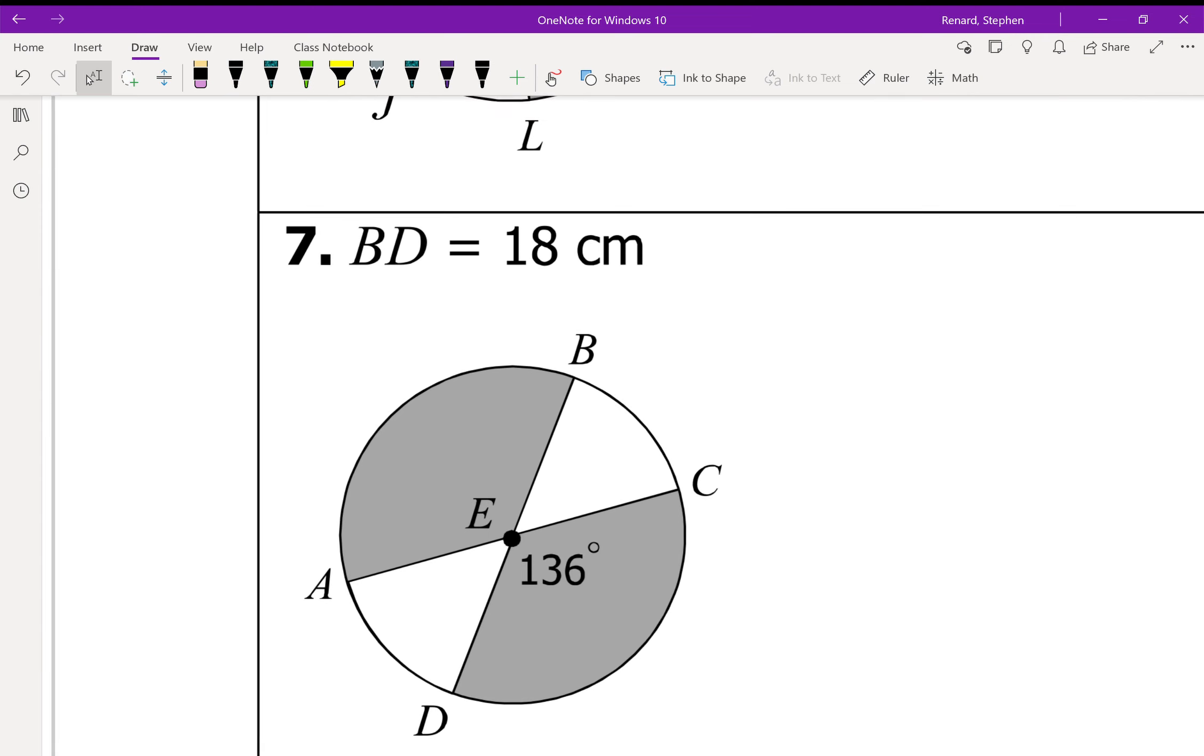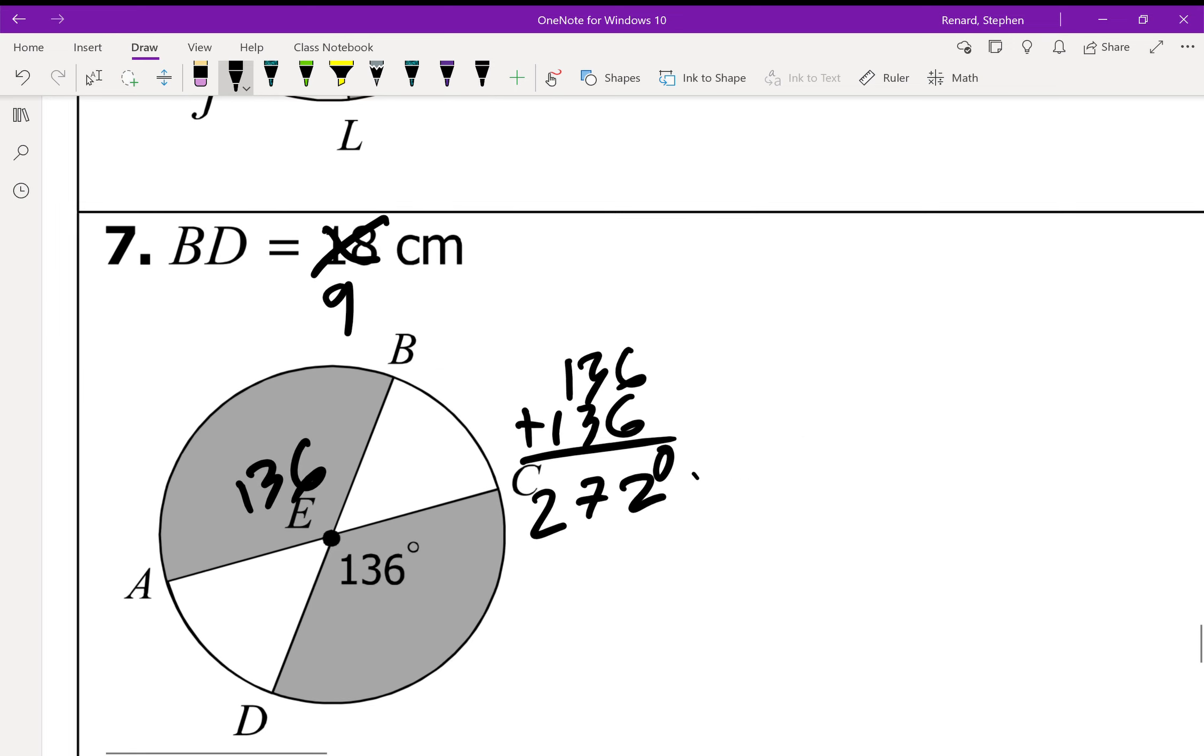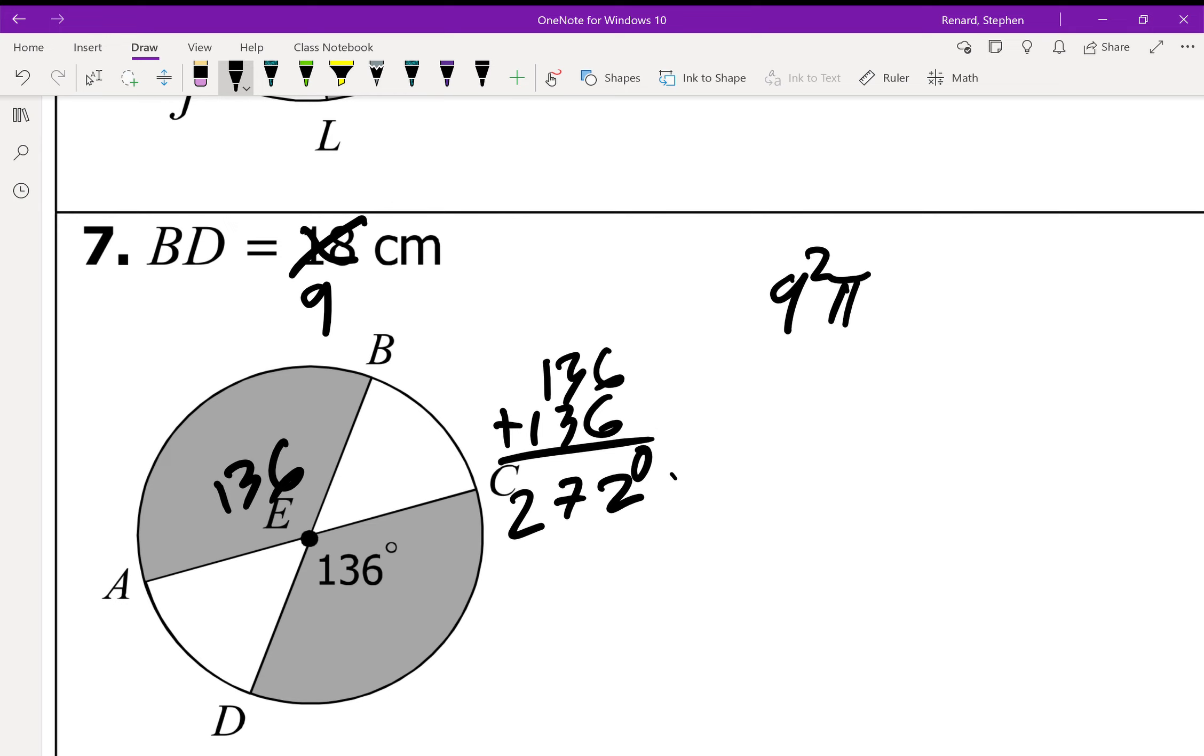Okay, ooh, tricky, tricky. So, notice what we have here is we have 136 degrees shaded. But it's also, its opposite is shaded. Which means that this is 136 degrees as well. Which means the total shaded area is 136 plus 136 or 136 times 2, which is going to be 272 degrees. B to D is 18 centimeters. B to D is a diameter. We cannot find the area with a diameter. So, we cut it in half. See how I did that? I cut it and then I wrote the half number there, 9.